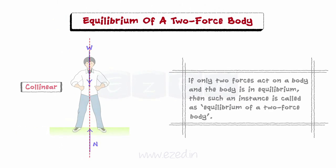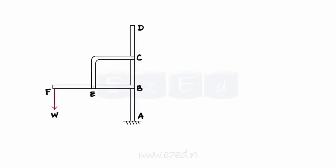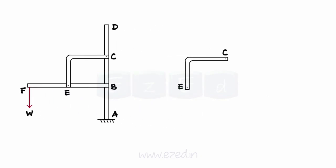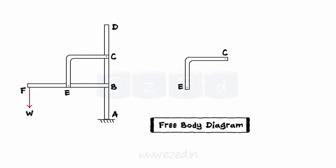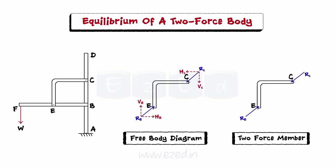Consider the following example. A frame consisting of three members AD, CE and BF is shown. Member CE is isolated and its free body diagram is drawn. Let RC and RE be the internal hinge reactions at C and E respectively. Since only two forces are acting on member CE, it is a two-force member.